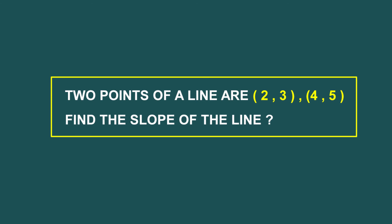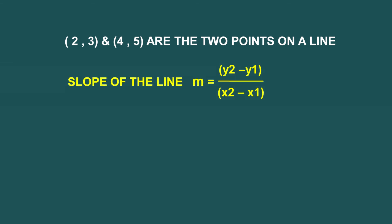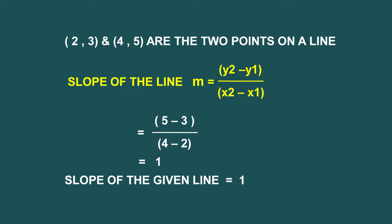Now we find the slope of a line. The endpoints of a line are (2, 3) and (4, 5). Find the slope of the line. The given two points are (2, 3) and (4, 5). The formula: M = (y2 − y1)/(x2 − x1). Substituting the values: M = (5 − 3)/(4 − 2) = 2/2 = 1. So the slope of the given line is equal to 1.